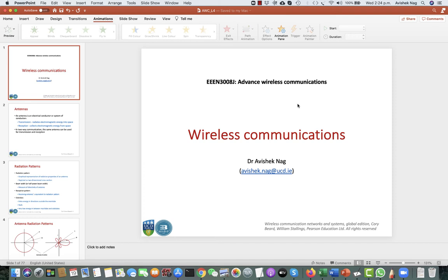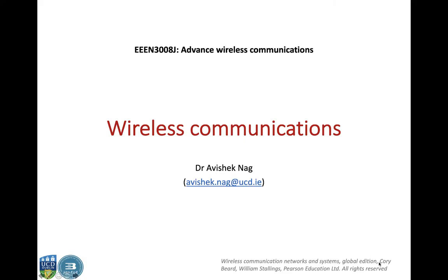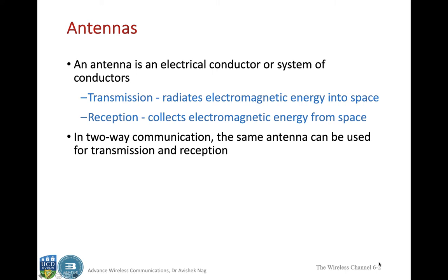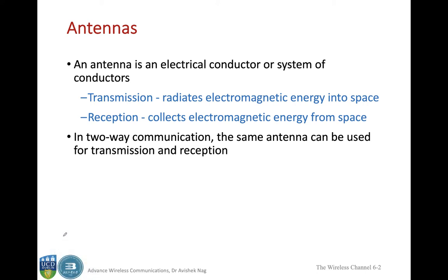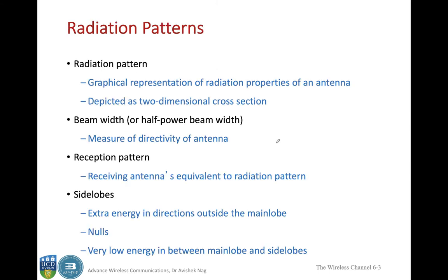Welcome to the next lecture of wireless communications. In this lecture we will start with antennas. Every wireless communication system comes with a transmitter and receiver, and at every transmitter and reception device you have an antenna to conduct the electrical signals. An antenna is an electrical conductor that launches electromagnetic waves into the space or air. In two-way communication the same antenna can be used for both transmission and reception.